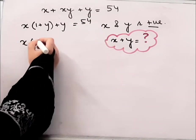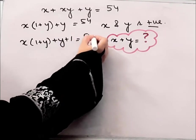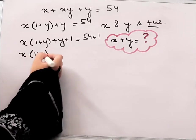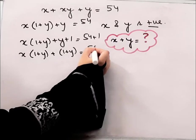What I will do here is add 1 to both the sides. And it will be 54 plus 1. This will be x times (1 plus y), this will be again (1 plus y), this is equal to 55.